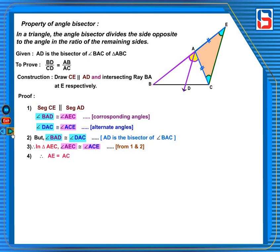Therefore, AE is equal to AC, property of isosceles triangles.